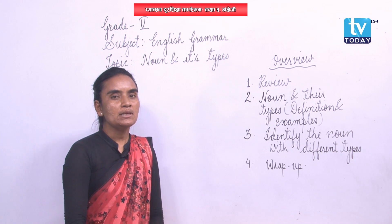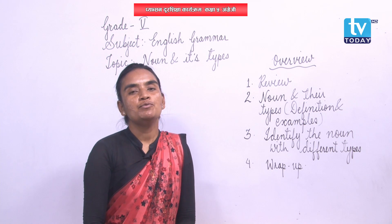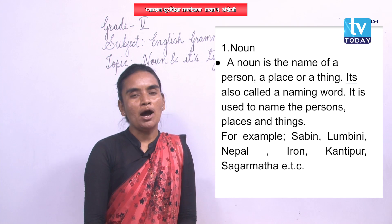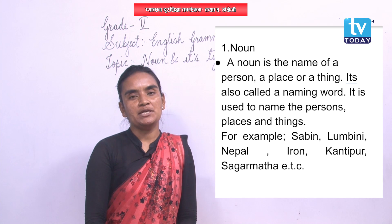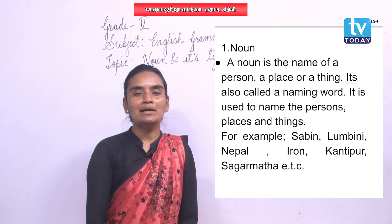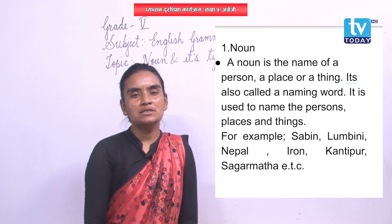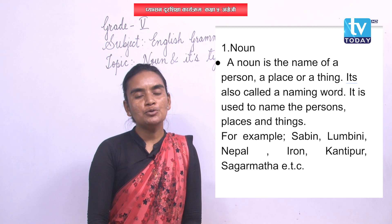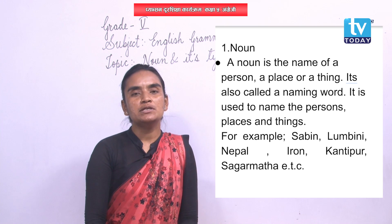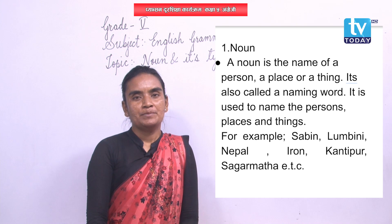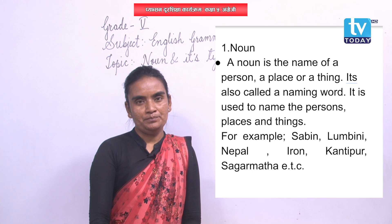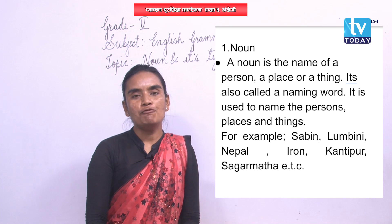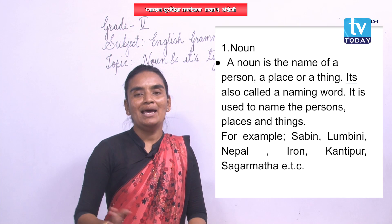Now let me enter the topic for today — that is noun. When we talk about noun, firstly we need to know the definition: what actually noun is. In English grammar, there are altogether eight parts of speech, among which noun is one of the most important. So, what actually is a noun? Noun is the name of a person, or a thing, or a place, or anything else.